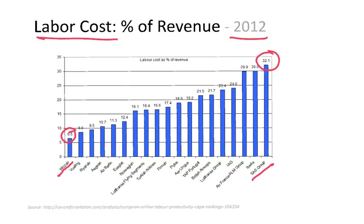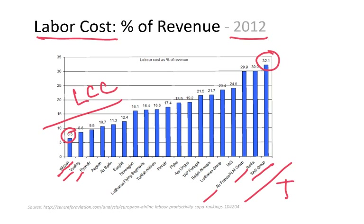Looking in a bit more detail, the next airlines are Vueling and Ryanair. Do you know what those airlines are? All of those tend to be low-cost carriers. On the other end we have SAS, Iberia, Air France, and so on — those are full-service carriers. In general, full-service carriers tend to have much higher labor costs compared to low-cost carriers.